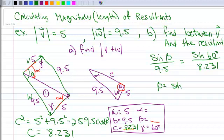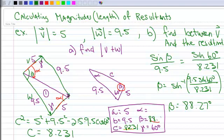So beta is going to be equal to the inverse sine of 9.5 times the sine of 60 over 8.231. And when you do that, you get 88.27 degrees. So I'm going to write it in here, and then I'm going to ask you, how come I don't have to do 180 minus 88.27?